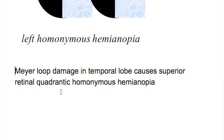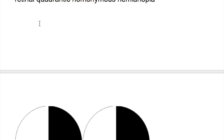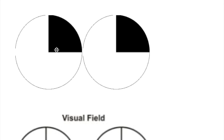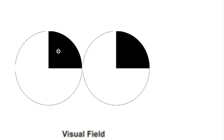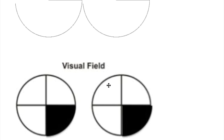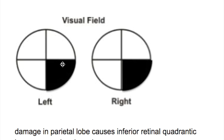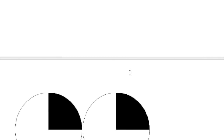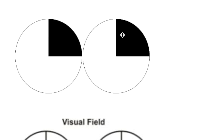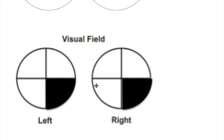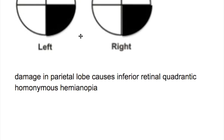Meyer's loop damage in the temporal lobe causes superior retinal quadrant hemianopia. Meyer's loop carries the inferior quadrant retinal fibers but represents the superior quadrant visual fields — this defect is known as the pie in the sky. The lower defect from inferior fibers carrying inferior quadrant retinal fibers is known as the pie in the floor.